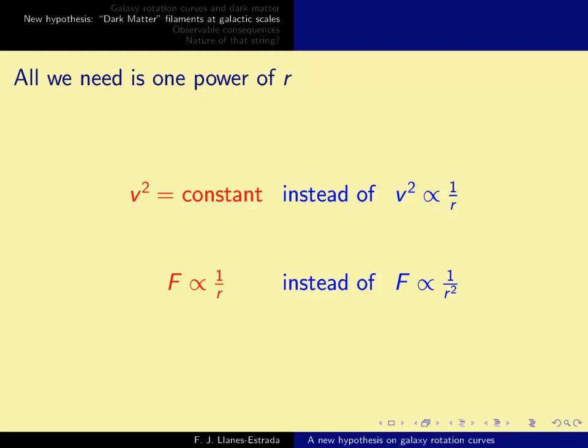Dark matter achieves this one over r with a spherical halo by distributing its density in a special way, as we saw.